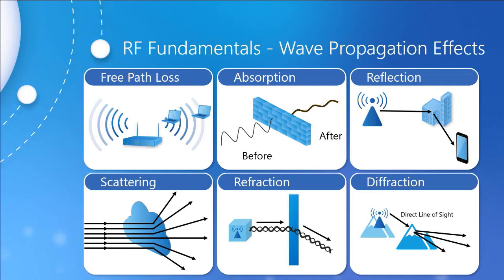Refraction is when the wave changes direction as it passes from one medium to another. A good analogy is a straw or spoon in a cup of water — viewed from the side, it looks like it's been cut at the waterline. Refraction has minor impact on indoor networks and is more of a concern for outdoor long-range wireless links. Different densities and humidities will have different refraction effects: drier air bends the signal away from Earth, while humid air bends it back toward Earth, which can be used to advantage in wide-range communications.